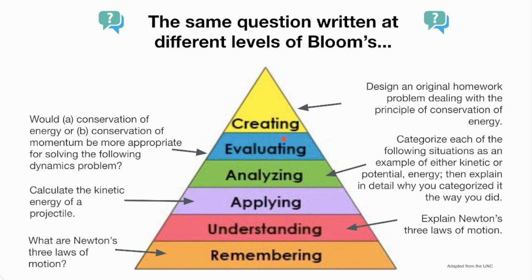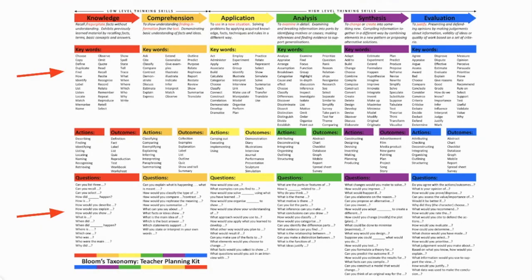By looking carefully at Bloom's taxonomy, we can design questions that focus on different cognitive skills. For example, here is the same concept written at the level of evaluation: 'Would A) conservation of energy or B) conservation of momentum be more appropriate for solving the following dynamics problem?' We should seek out resources that help us write questions at different levels — knowledge, comprehension, application, analysis, synthesis, as well as evaluation — by focusing on key words that best fit each cognitive skill and experimenting with a variety of questions that lend themselves to each level.